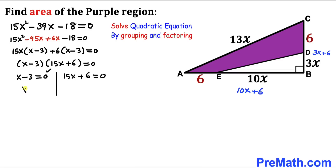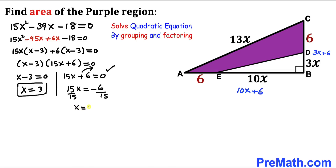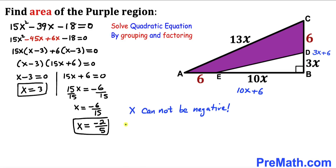From the first equation, x equals positive 3. For the second equation, 15x equals negative 6, so x equals negative 6 divided by 15, which reduces to negative 2 over 5. Since x cannot be a negative number, we accept x equals positive 3 and reject the negative value.